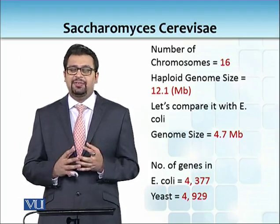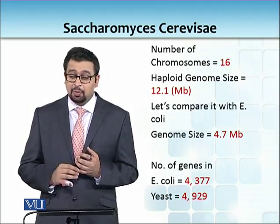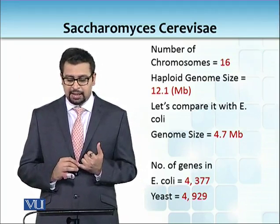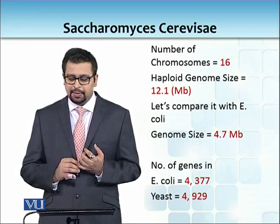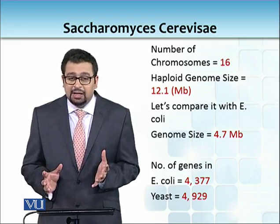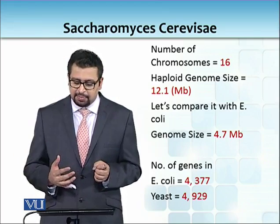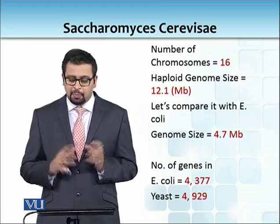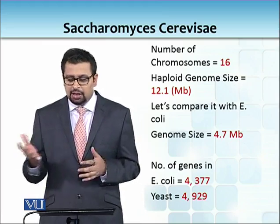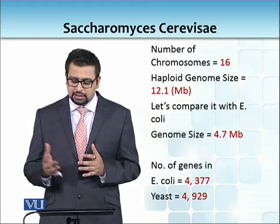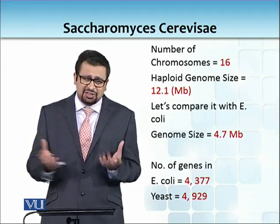What are the differences yeast has from bacteria? The number of chromosomes is 16, compared to 1 in bacteria. Haploid genome size is 12.1 megabases; if we compare this to bacteria it is 4.7 — pretty much three times larger. The number of genes is approximately the same: E. coli has 4,377 and yeast has 4,929.